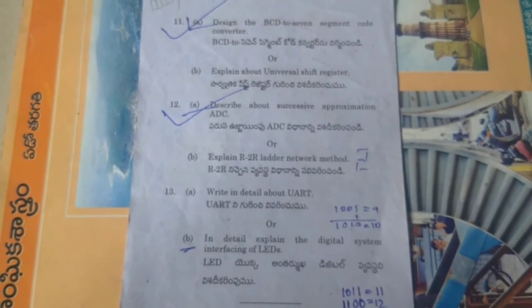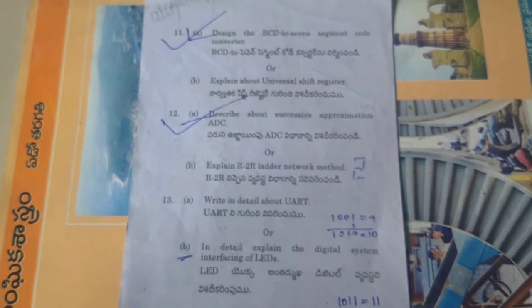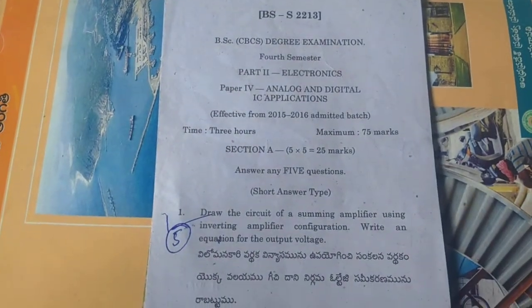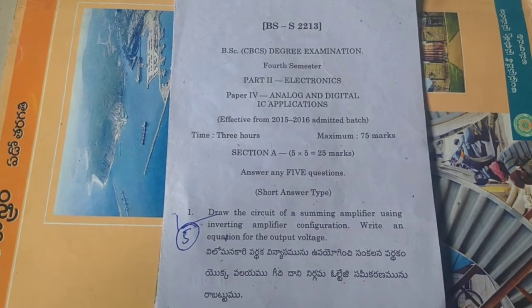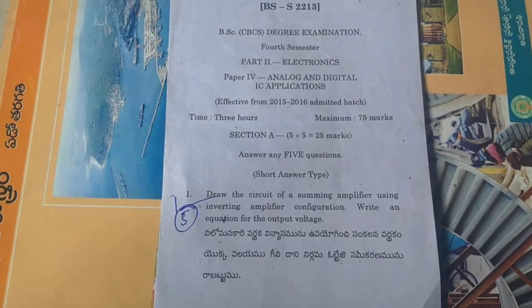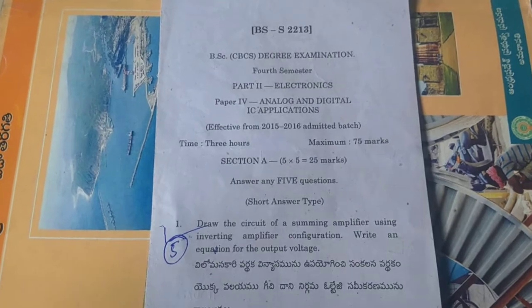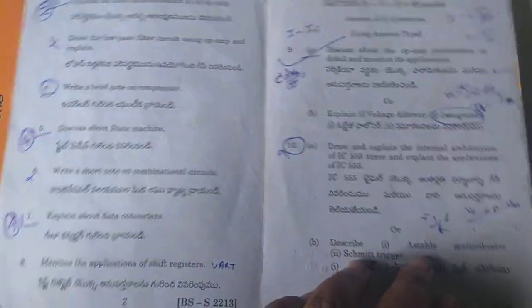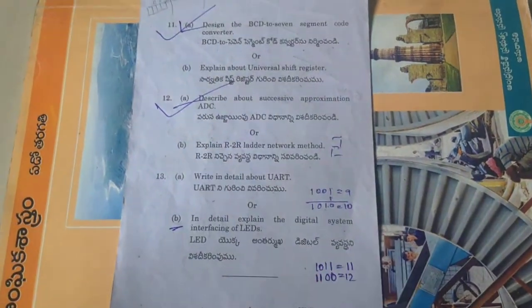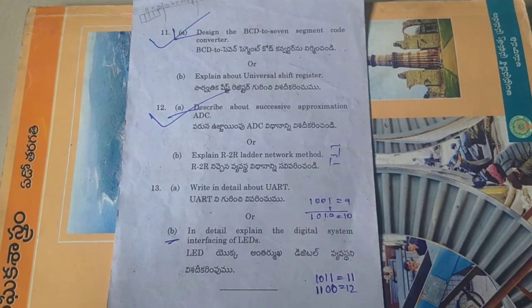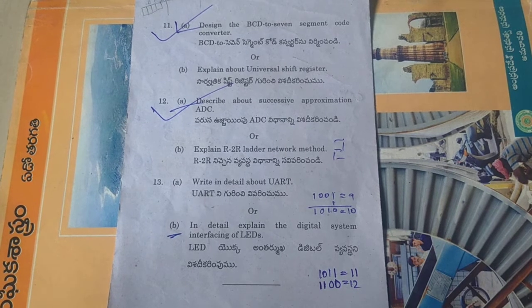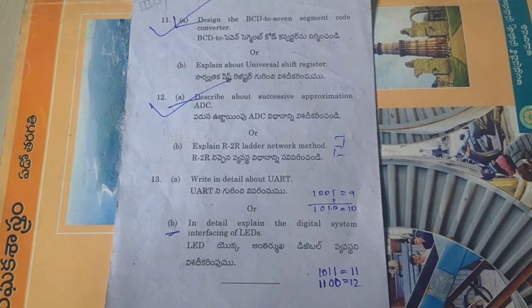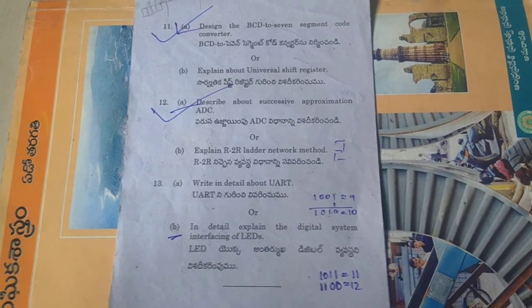Friends, we have a public paper. This is the 4th semester structure. This is the diagram. This is the top page. This is the minimum marks — 28 marks. This is the shift register. This is the data converter. This is the 5th semester. Friends, this is the video. Please like and comment. Subscribe to my channel. This is the 4th semester. Thank you, friends.